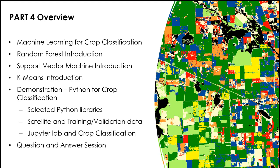Thank you very much for the introduction and welcome to all participants. Let's start with a quick overview of today's session. We will first review some theory basics on supervised and unsupervised machine learning algorithms and their use in crop classification. Then we will look at some algorithms in more detail: the random forest, the support vector machine, and k-means. Then we will move to the demonstration part, introducing selected machine learning libraries and satellite and training/validation data. Finally, we will do a practical demonstration of crop classification using radar and optical data in Python and Jupyter Notebook.